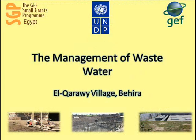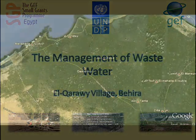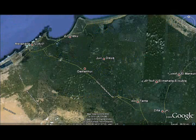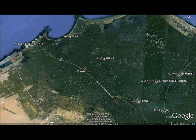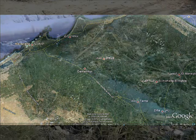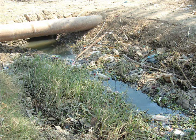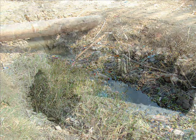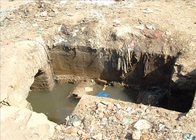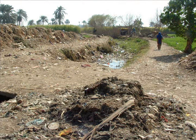El Karawi is a village in El Behera Governorate, Egypt, with a population of around 5,000 people living in around 500 houses. The village is deprived of any sanitation service, and a large part of wastewater ends up in the freshwater canal of El Karawi. This canal feeds into the River Nile, causing potential damage to water quality.